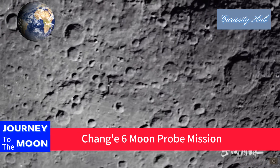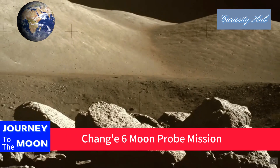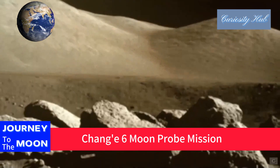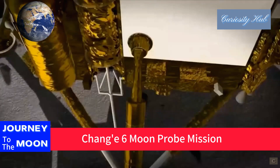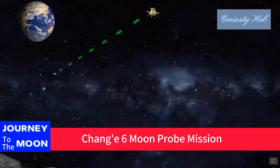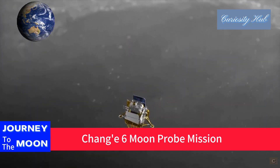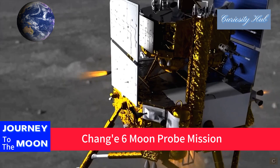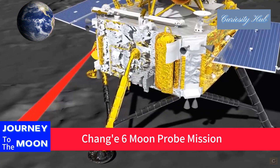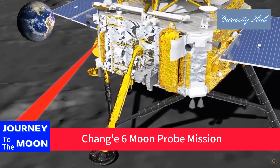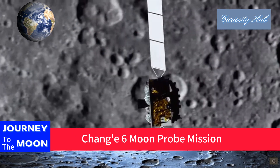The sixth stage is the lunar surface operation stage. After landing, the lander-ascender combination will use drilling and scooping to collect lunar regolith samples and package them. Chang'e 6 will spend 48 hours on the lunar surface completing lunar far side sample collection.